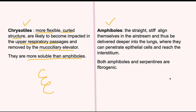In contrast, amphibole fibers are very straight and stiff, and therefore they align themselves in the airstream and get delivered deeper into the lungs. When delivered deeper into the lungs, they are not removed by the cilia. They penetrate the epithelial cells, activate various macrophages, and can reach the interstitium causing fibrosis. Both chrysotiles and amphiboles are fibrogenic, but amphiboles are more pathogenic than chrysotiles.